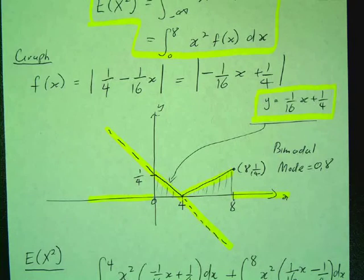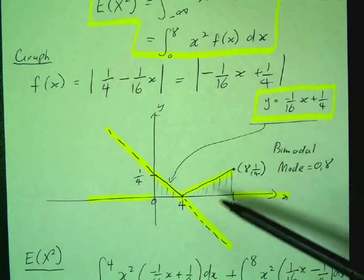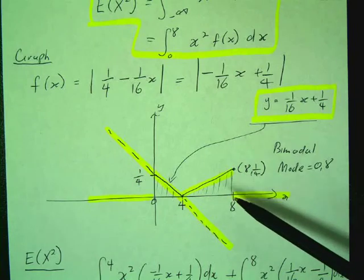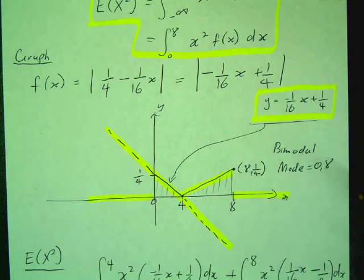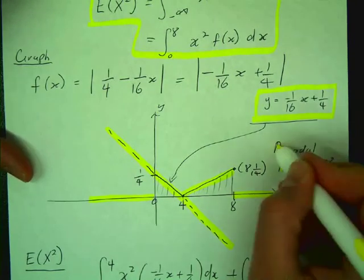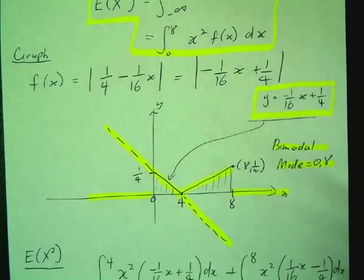Now if we were asked to find the mode of this, we need to find the x-value for which f of x is the greatest. And even though I haven't drawn this symmetrically, f of x equal to a quarter is the greatest value and that occurs at 2 points, 0 and 8. So I would say the mode is 0 and 8 and it's bimodal. If we're referring back to what we did in statistics in earlier years, we've got 2 modes, that's bimodal.